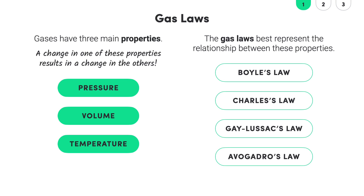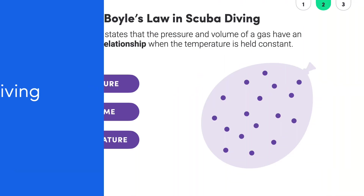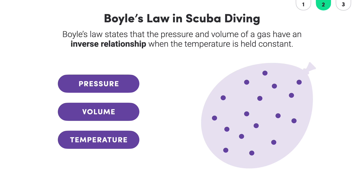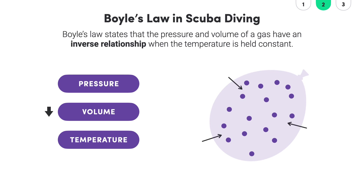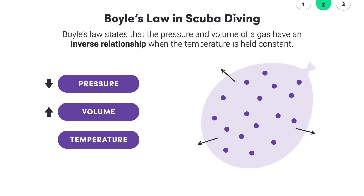All of the gas laws apply to our scuba diving journey, but let's look at two of them for this lesson: Boyle's Law and Charles's Law. Starting with Boyle's Law — this law states that the pressure and volume of a gas have an inverse relationship when the temperature is held constant. In simpler terms, if you decrease the volume of a gas, its pressure will increase because the particles are closer together. And if you increase the volume, then pressure decreases as the particles move far apart. Now where do bubbles come into this?